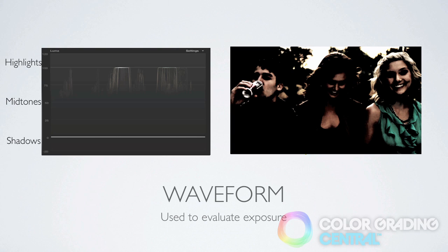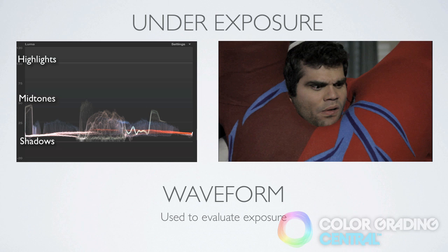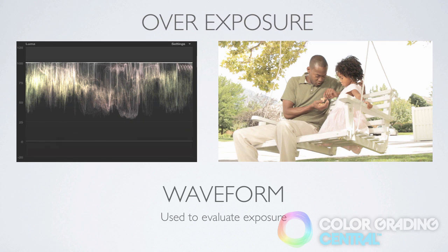Let's evaluate some images with the waveform monitor. In this example, because the trace is gathered all at the bottom in the shadows, we can see that the image is underexposed. And in the next example, the trace is gathered all at the top in the highlights, indicating that the image is overexposed.